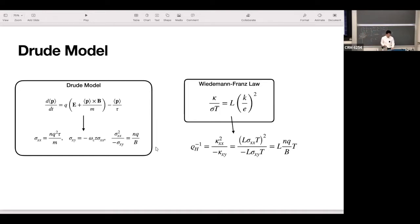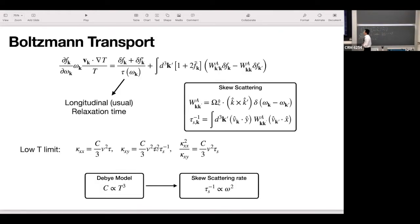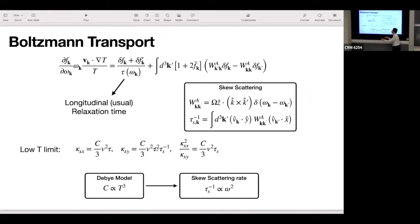A more realistic model would be to use the Boltzmann transport to discuss what happens with phonons. In Boltzmann transport, you put a temperature gradient, which drives uneven distribution of phonons in the x direction. And then you have a relaxation time, the usual relaxation time in the longitudinal direction.